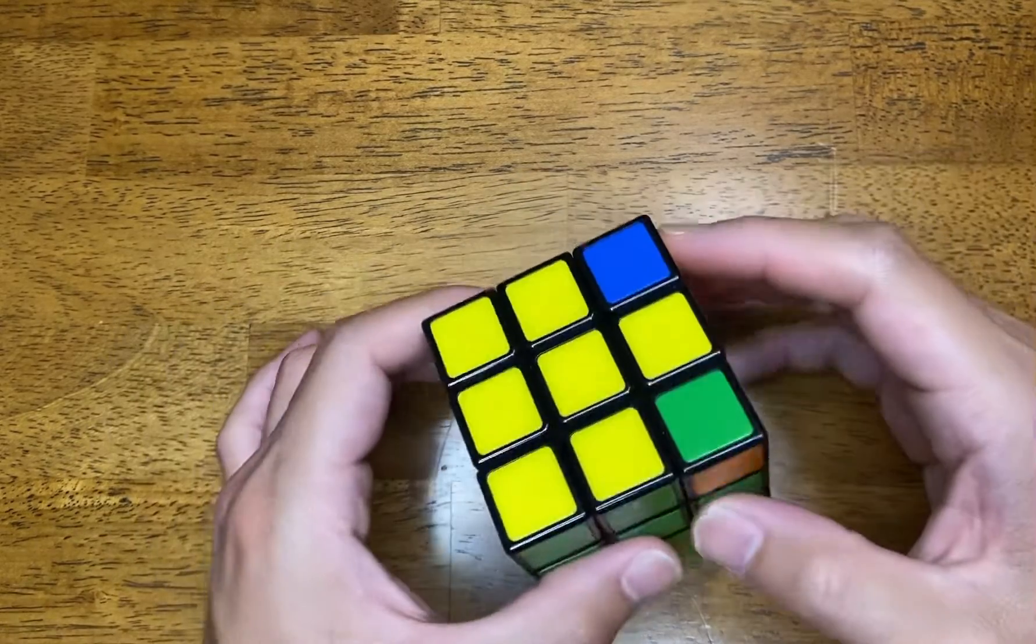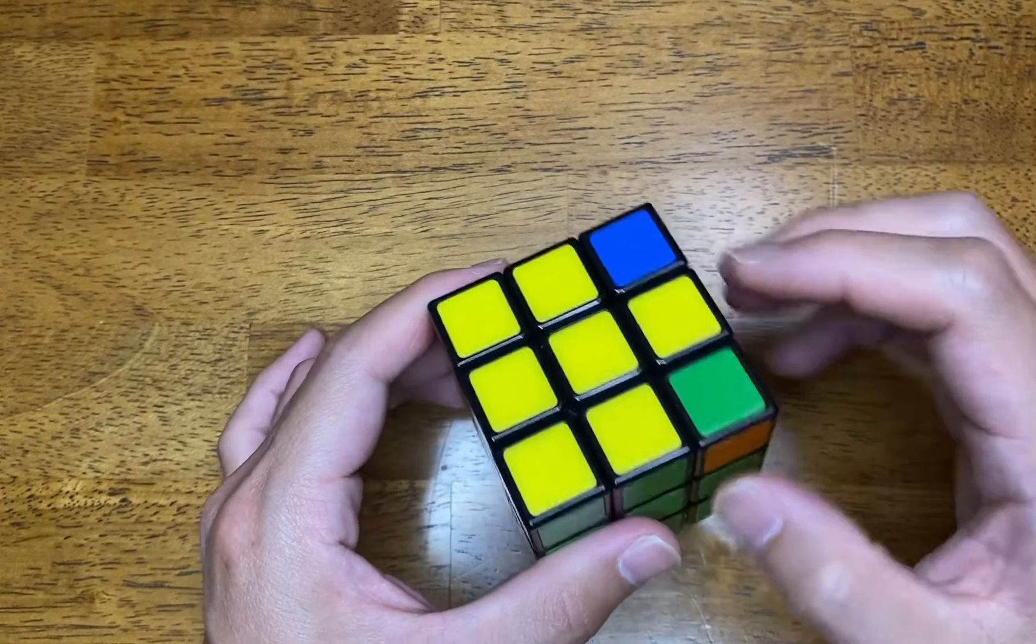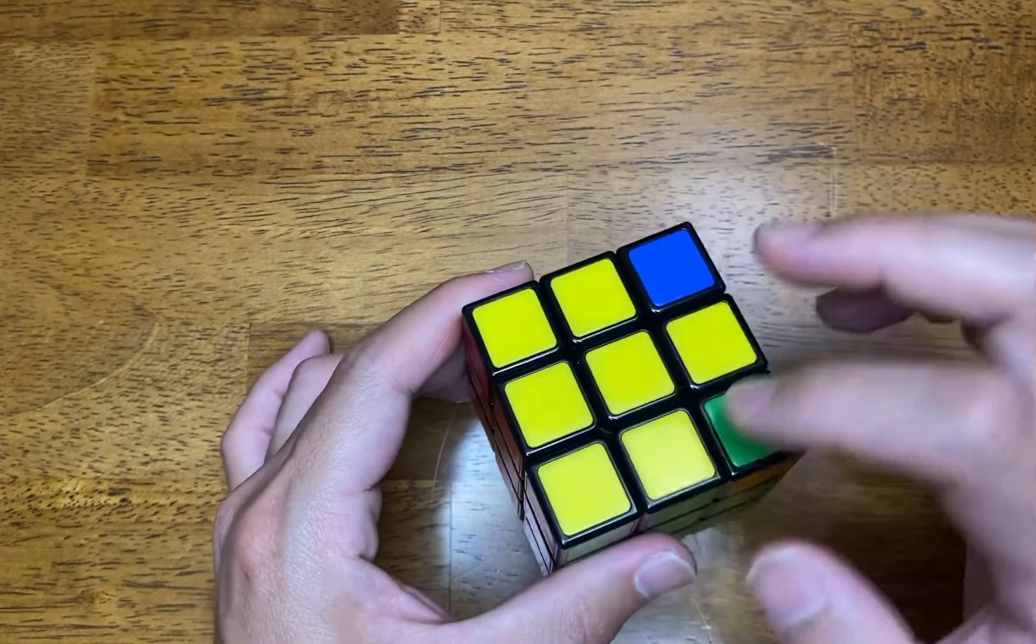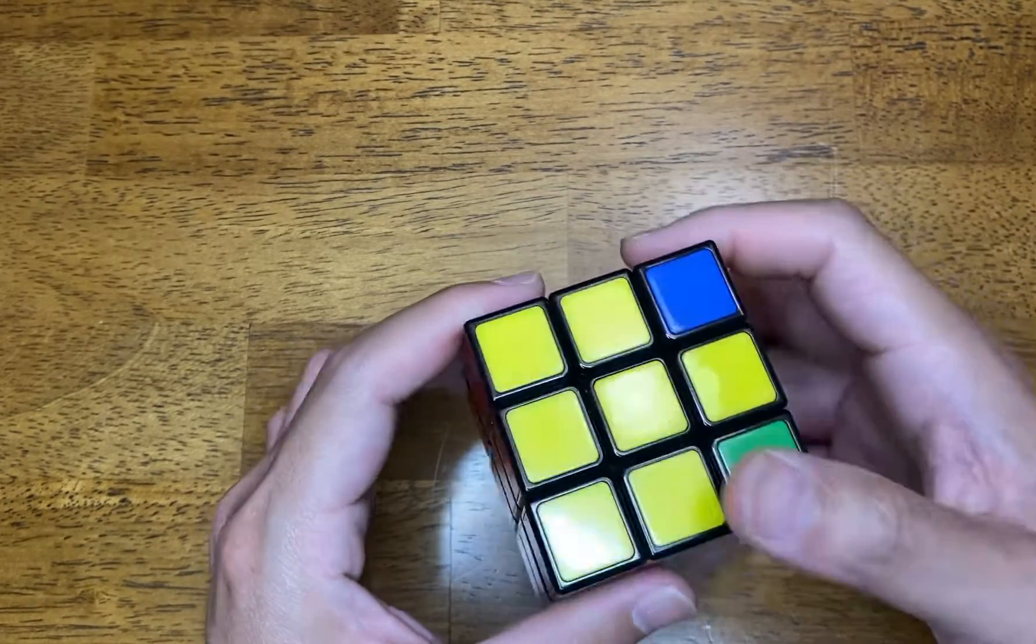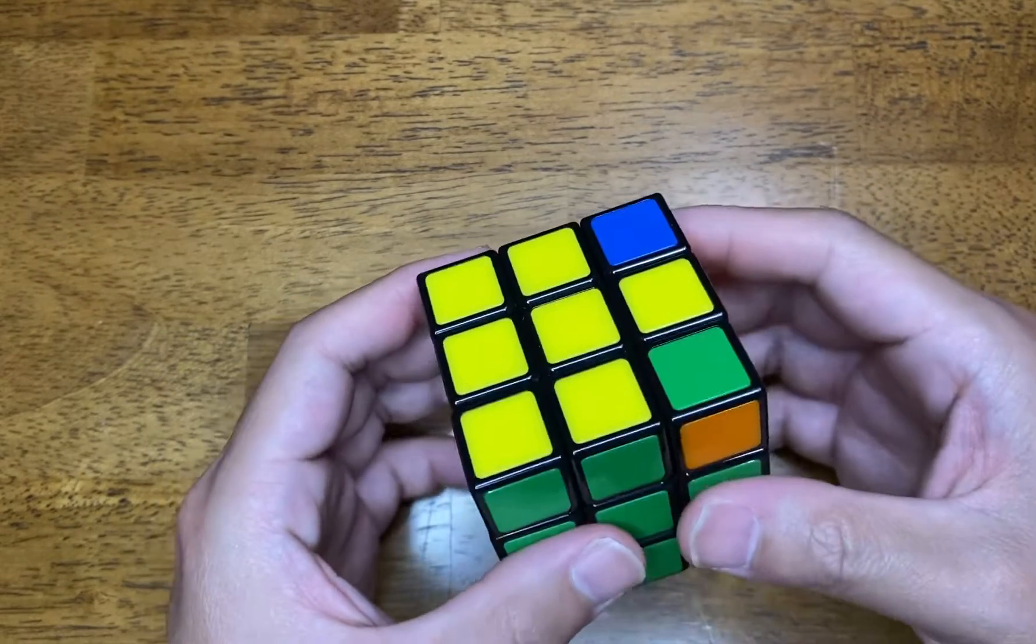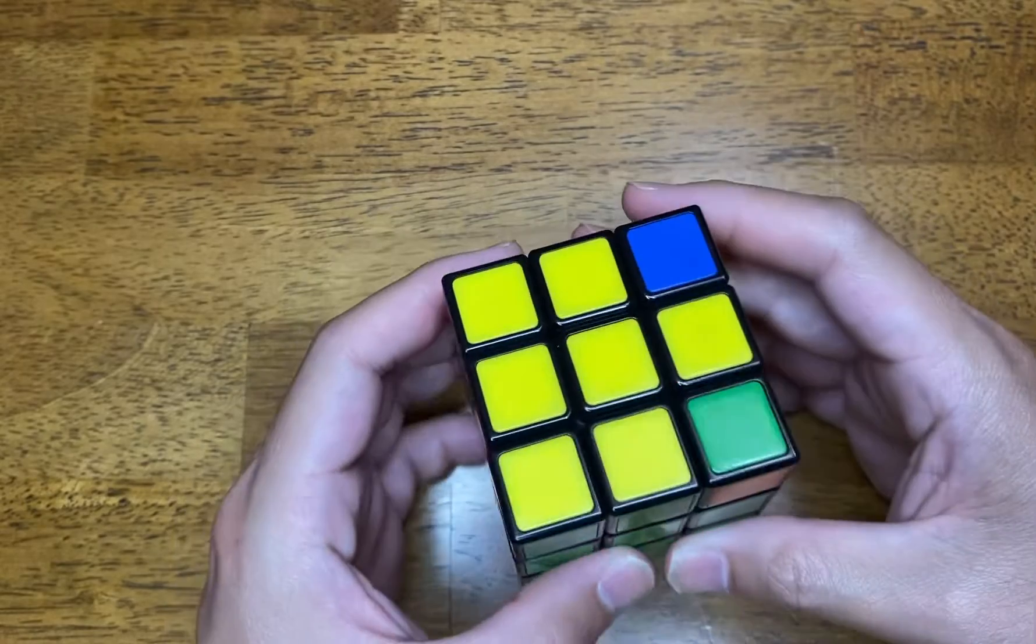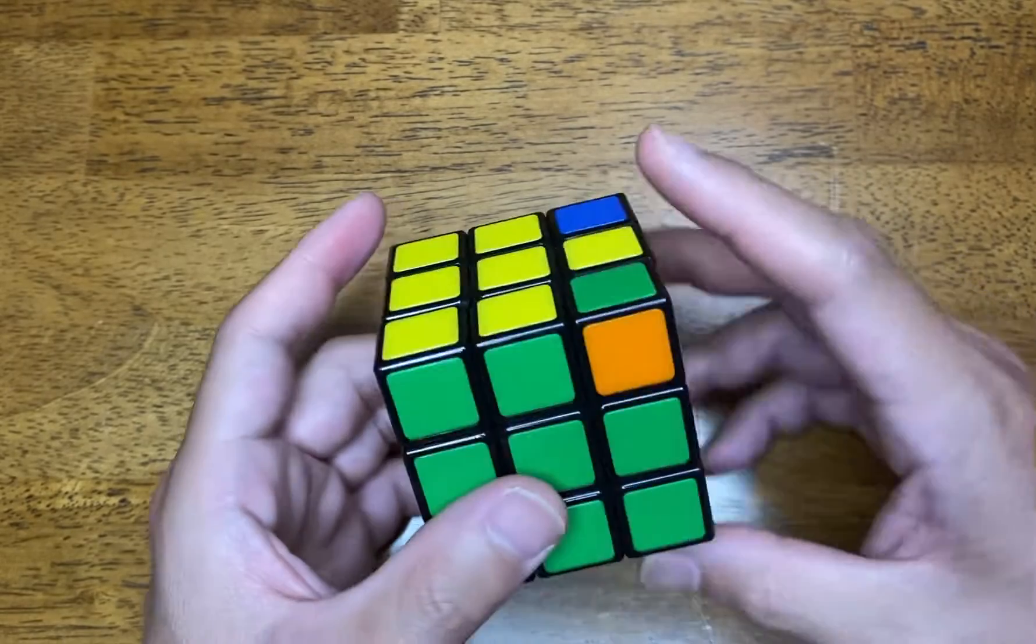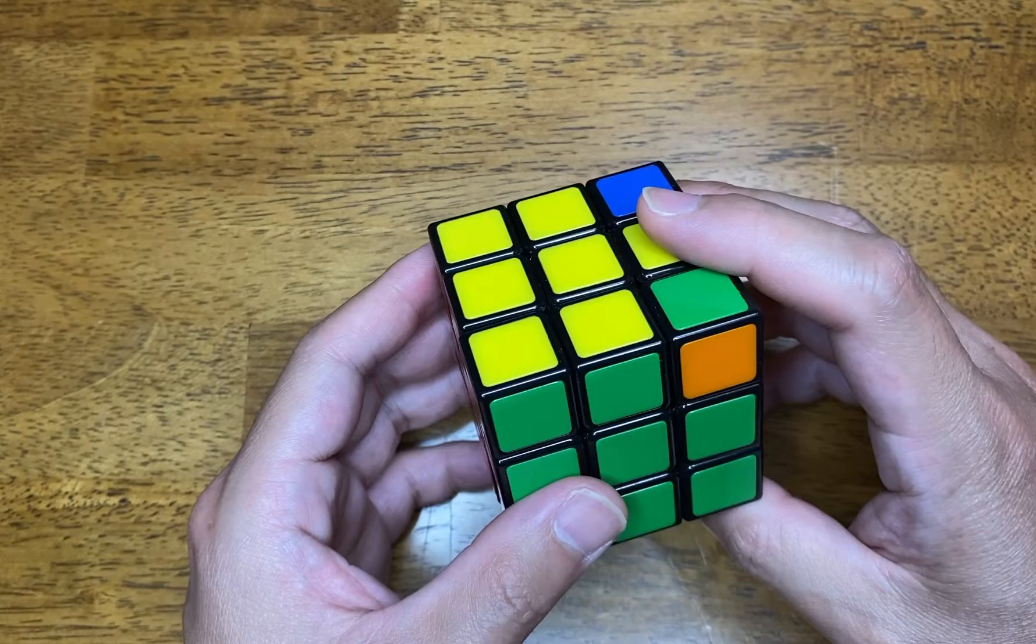Great, so now that we have all the corners in the right spot, the final step is an algorithm called the right 180, left 180.